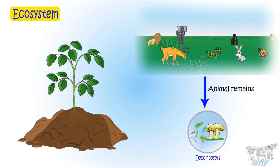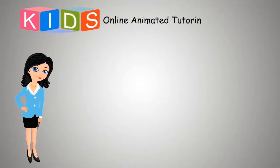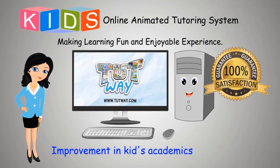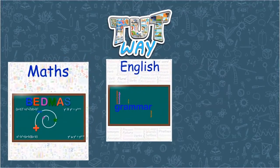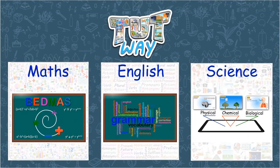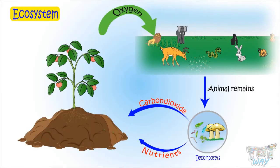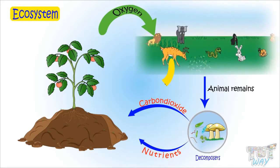Decomposers reduce all the dead remains into nutrients and carbon dioxide, which is again used by plants to produce food and release oxygen to the air. This oxygen is again used by all living things. The cycle continues as all living things provide carbon dioxide to the plants, and are again reduced to carbon and nutrients by decomposers.